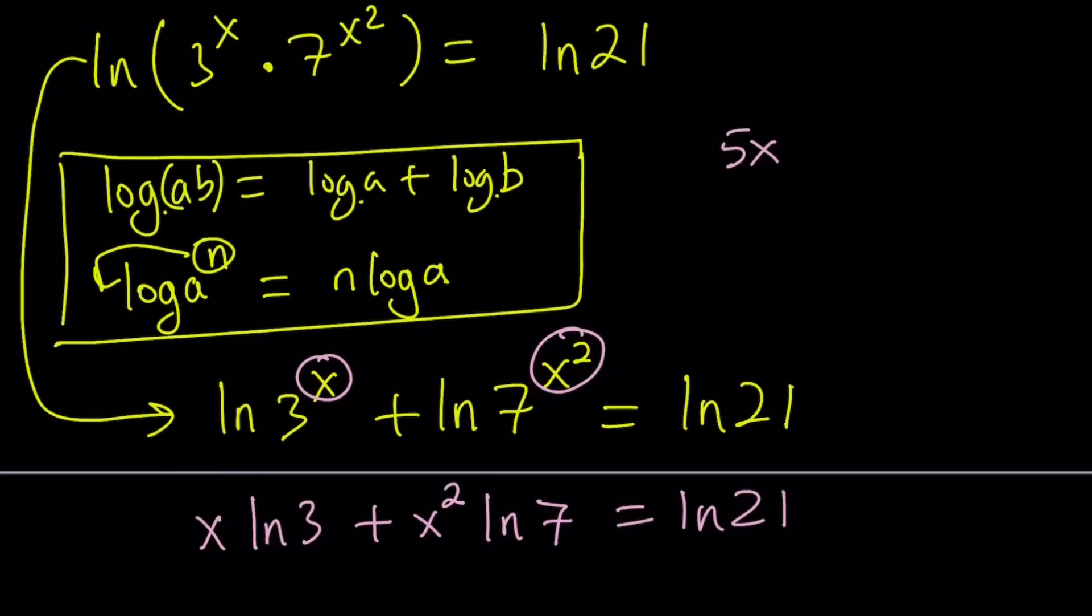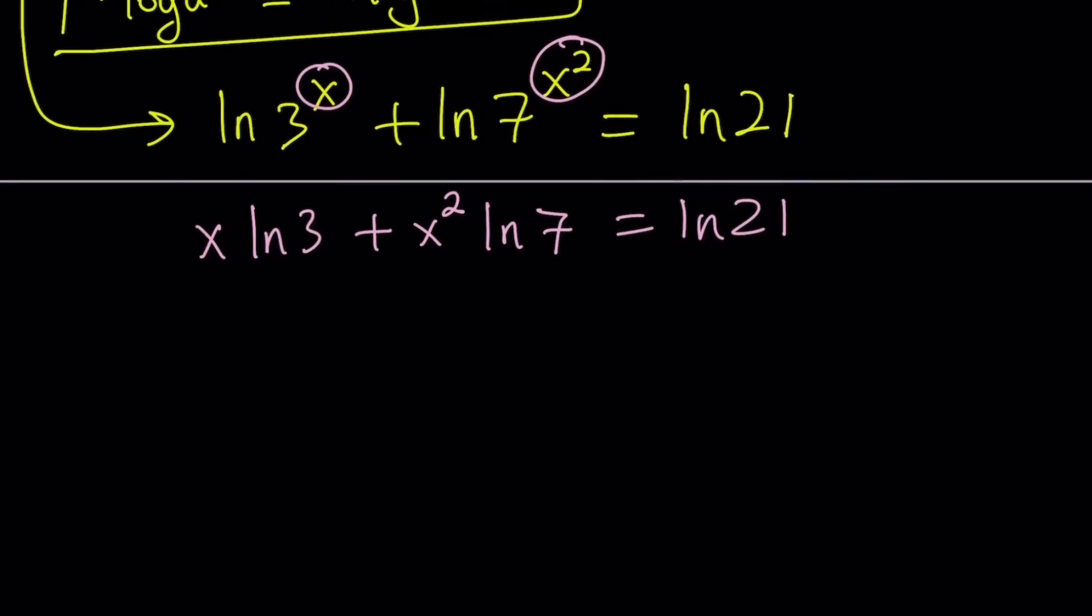So when we write something like 5X, it just means 5 times X. But of course, when you write it at X5, it's a little different. So that's why we want to write the coefficient, the number first. Anyways, so I'm going to go ahead and write this as a quadratic equation because it is a quadratic equation. It's quadratic in X. So to emphasize the coefficients, I'm going to write it like this. ln 7 times X squared plus ln 3 times X. And then I'm going to go ahead and subtract ln 21 from both sides to make this a full quadratic.